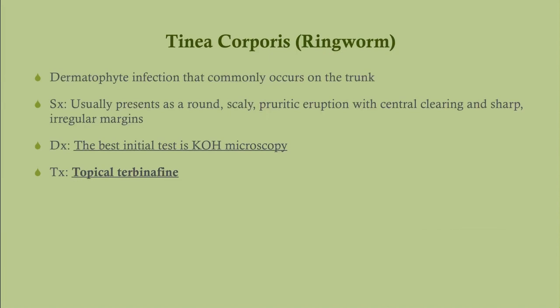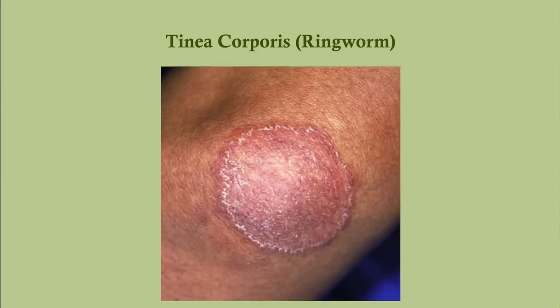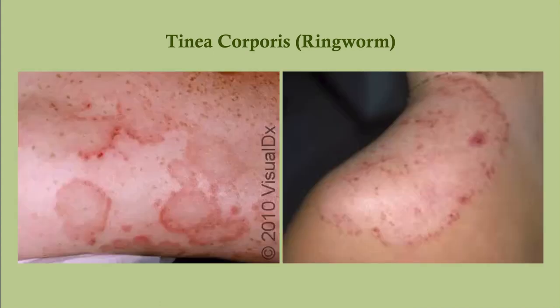Tinea corporis, also called ringworm, is a dermatophyte infection typically on the trunk. It presents as a round, scaly, pruritic eruption with central clearing and sharp but irregular margins. The diagnosis and treatment are the same as the other tineas. It appears round or ovular with scaling around the periphery — sometimes resembling psoriasis. Lesions can be multiple small ones or larger ones.